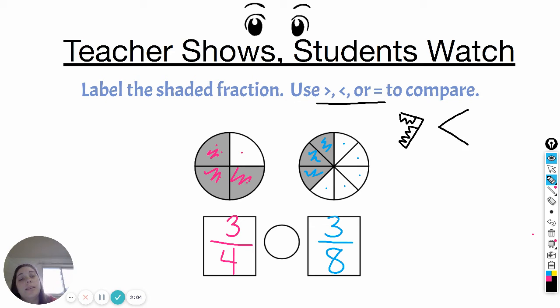This is a less than symbol. The alligator mouth would be eating the number that's over here. It eats this number if it's this way, it eats this number. We use equal to if they are the same, if our fractions cover the same amount of space.